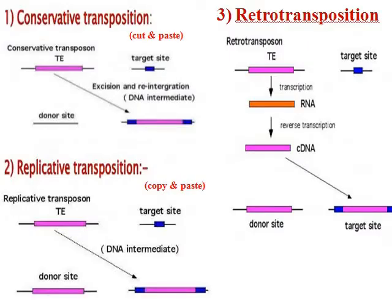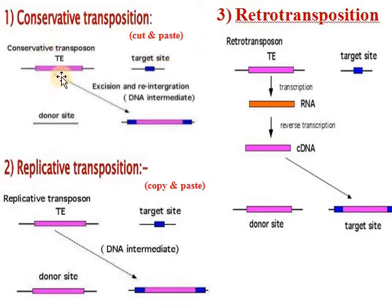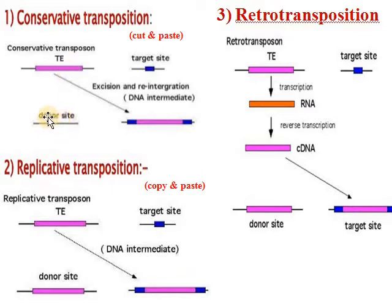In conservative transposition, the transposable elements move from the donor site to the target site. The result is that the donor side loses the transposable element — it is smaller — and the donor site is repaired by ligase enzyme. Because the transposable element moves to the target side, this is known as cut and paste or conservative transposition.